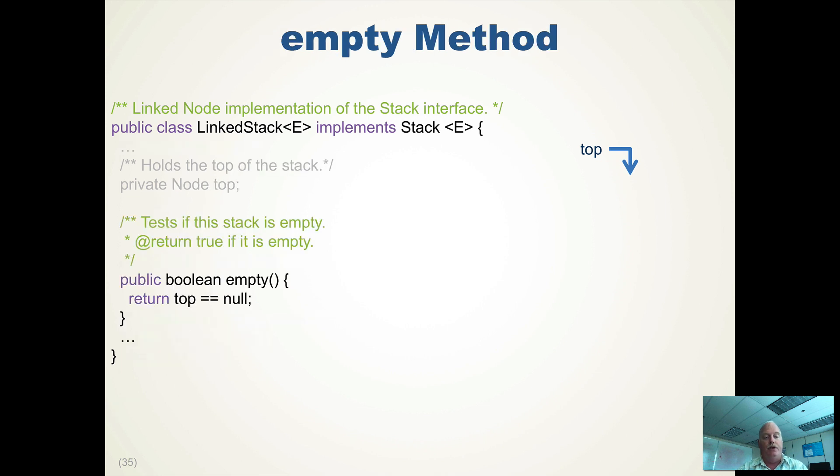If it's empty, to check for empty, we say top equals null, or equal equals null. If top is not null, then there's stuff in the stack. Again, we don't know how many they are. We don't have to worry about anything. But if top is pointing to something, then the stack is not empty, and it should return false.